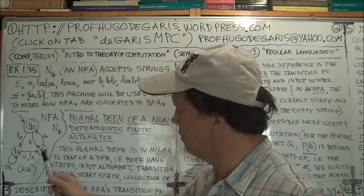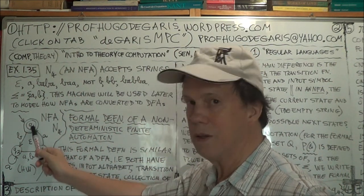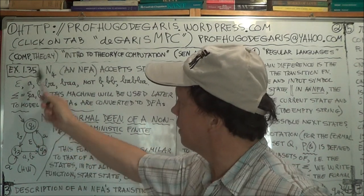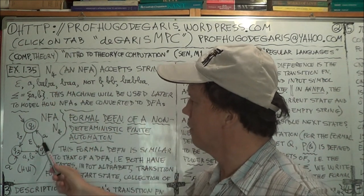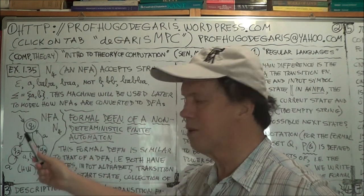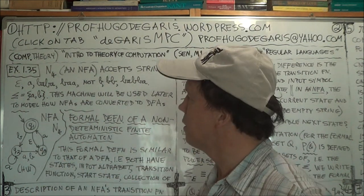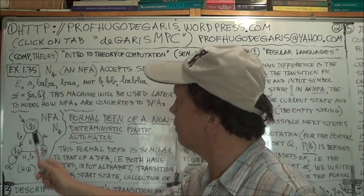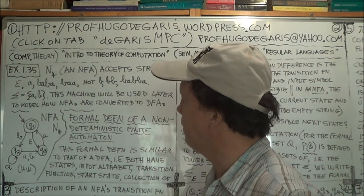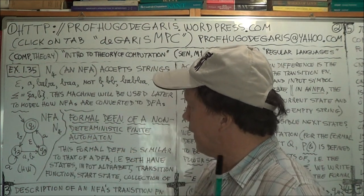Well, so deterministically this one goes to here. And that's it, that's the end of the input string, so it's just left in Q1. Well that's an accept state, so that string A gets accepted, right? How about BABA? B-A-B-A.